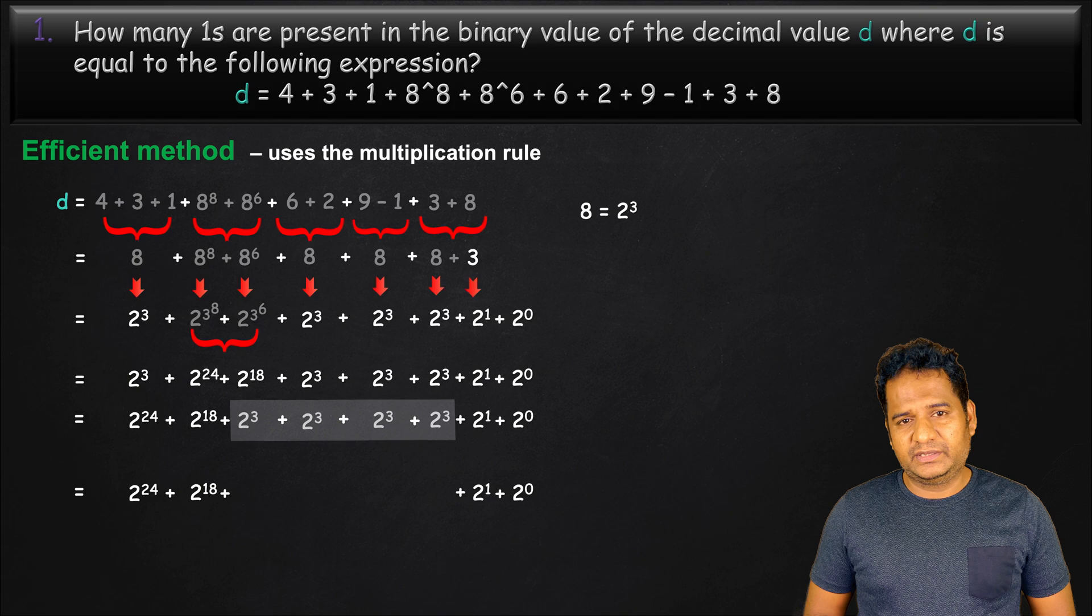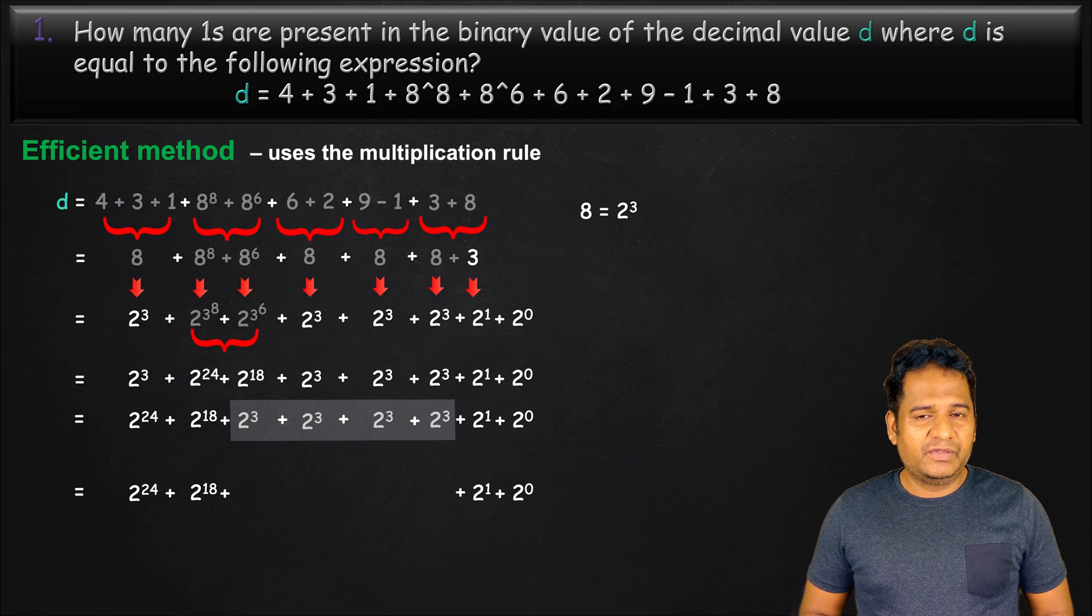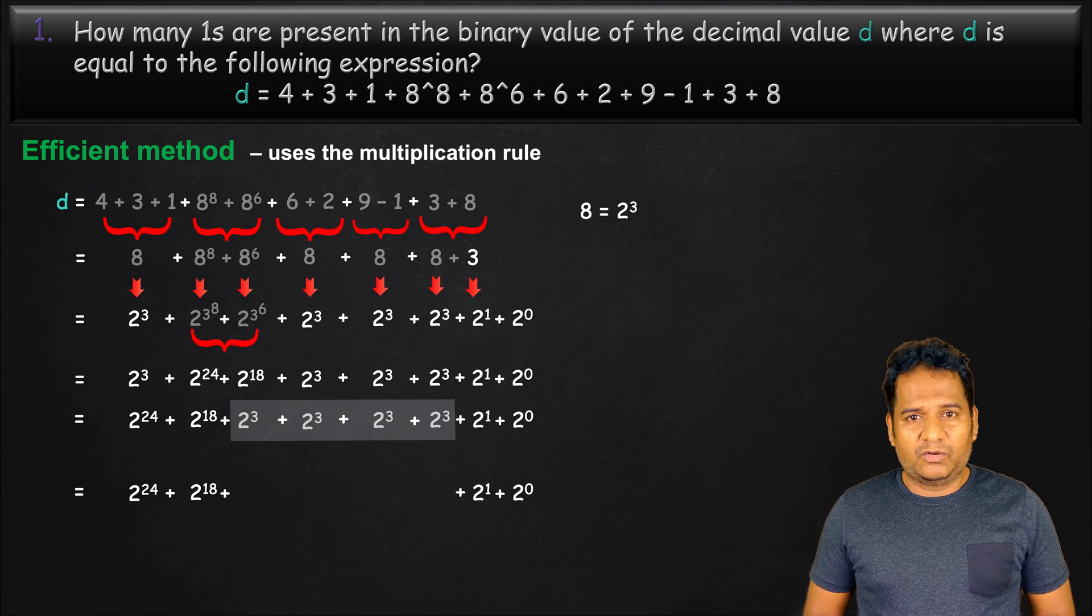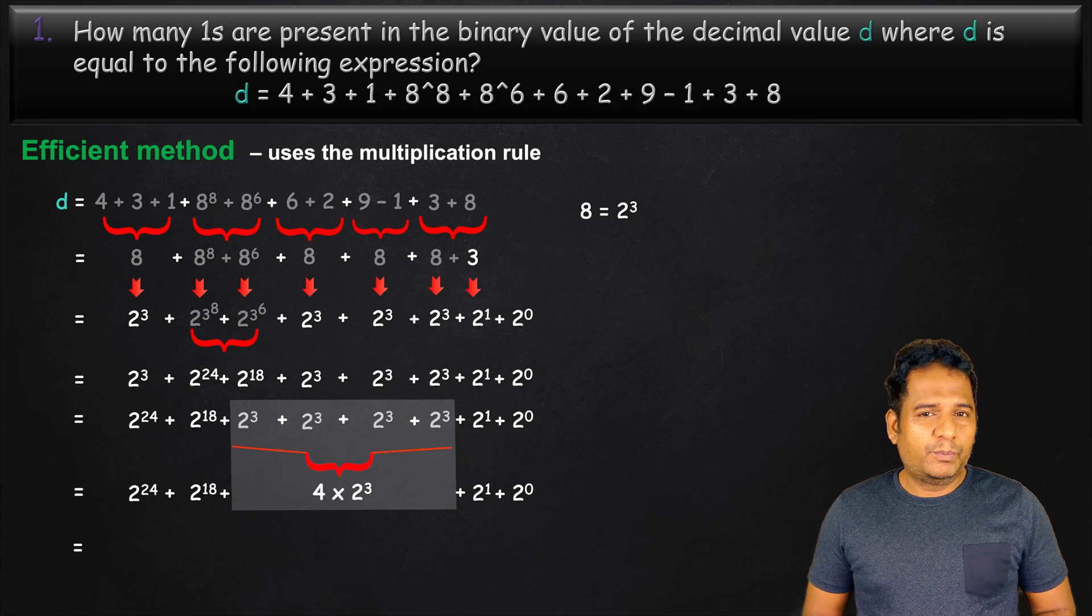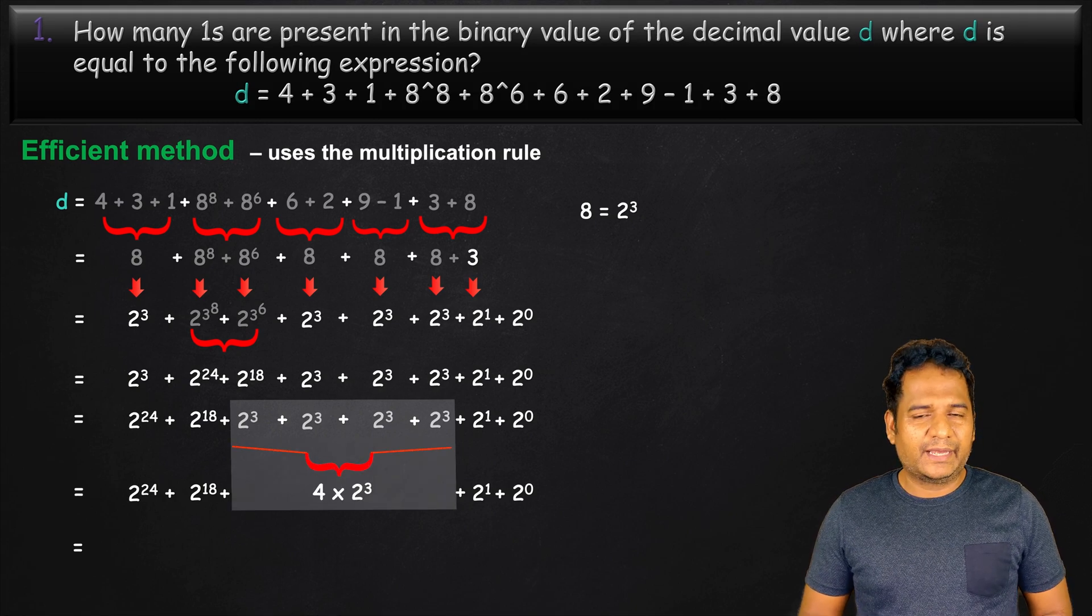Now, we'll have 4 2 power 3s. However, we want all the power of 2 to be unique. Hence, we can sum all 2 power 3s and write it as 4 times 2 power 3.